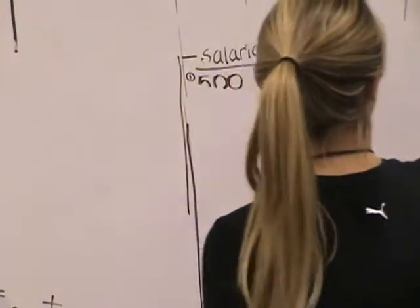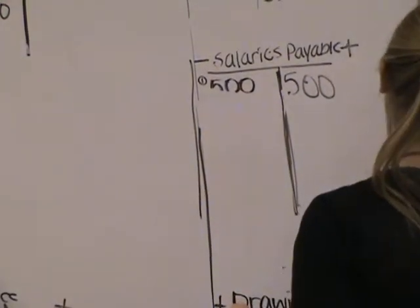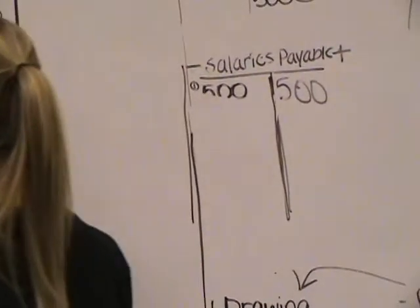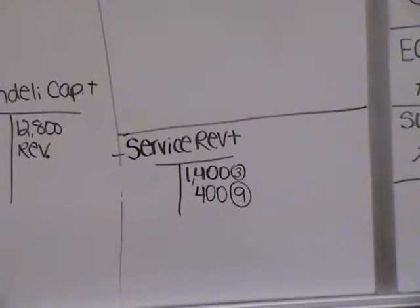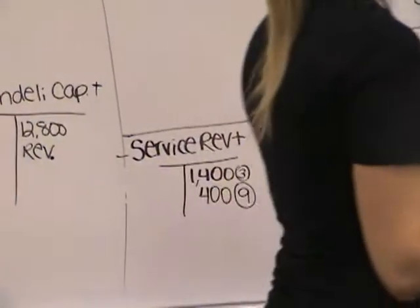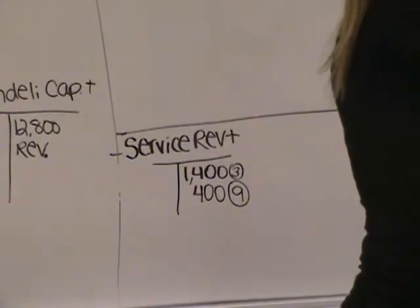Entry nine, she's right, he's right, of course. Nine was the 400 account receivable increase. Why did it increase? Because we performed a service. In entry nine, the credit was through the revenue. And now entry 10 is we got cash. Now it's adjust the data.